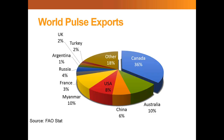Although we account for only 8% of global pulse production, we account for over a third of global pulse exports. We're unique in this sense even compared to our neighbors to the south, the U.S. Although the U.S. exports large quantities of ag commodities to China and other countries, they have a large domestic market to absorb some of that demand. Although that domestic market is growing in Canada, we still export over 80% of our crops. The bottom line is we're very heavily dependent on the export market as growers and as an industry here in Canada.